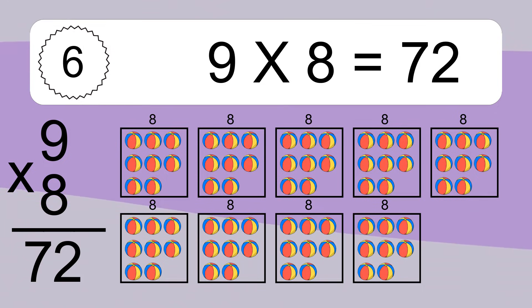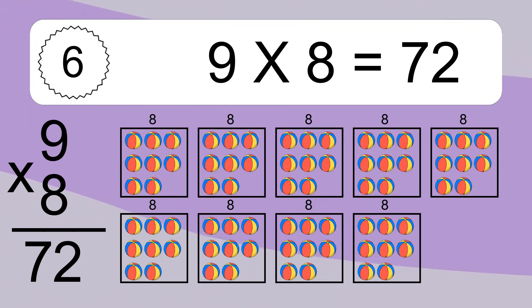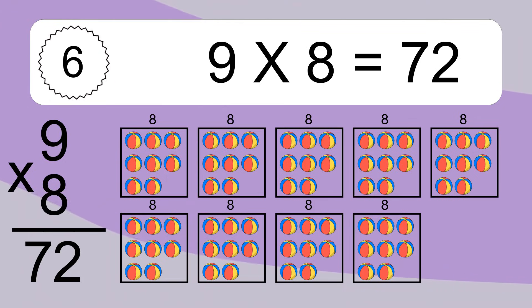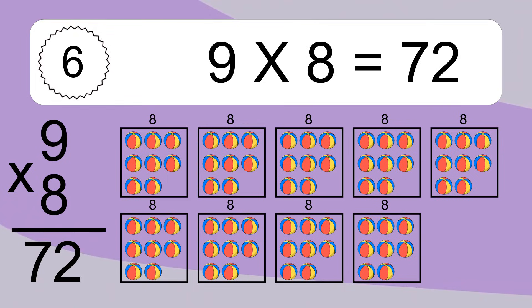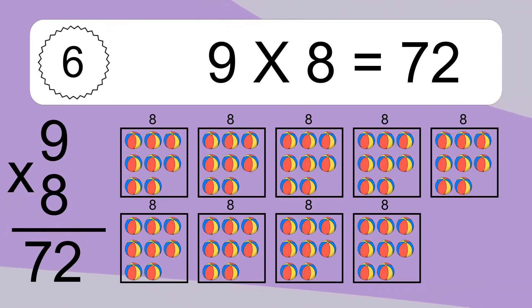We have 9 boxes, and each box has 8 colorful balls inside. If you count all the balls in all the boxes together, you will have 9 times 8 balls. This equals 72 balls.